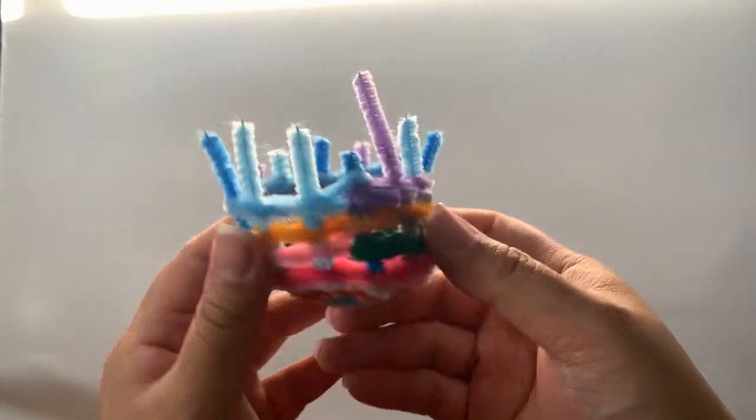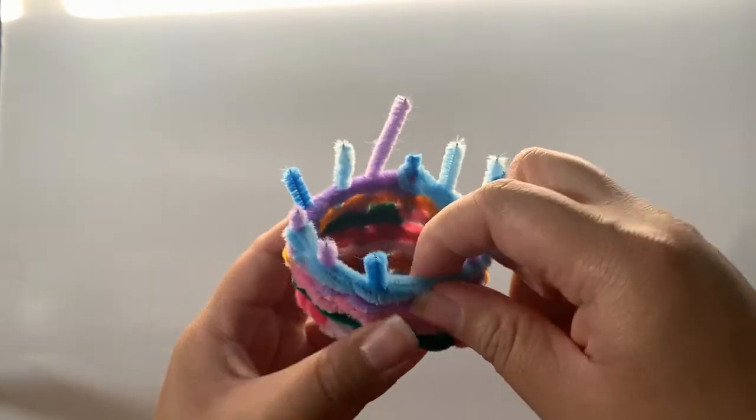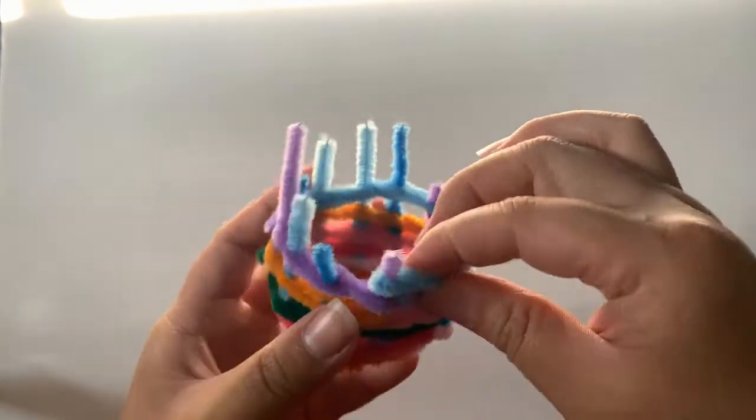When you reach the end of the short pipe cleaners with your weaving you can tuck them in to create the flat edge of the top of the basket.